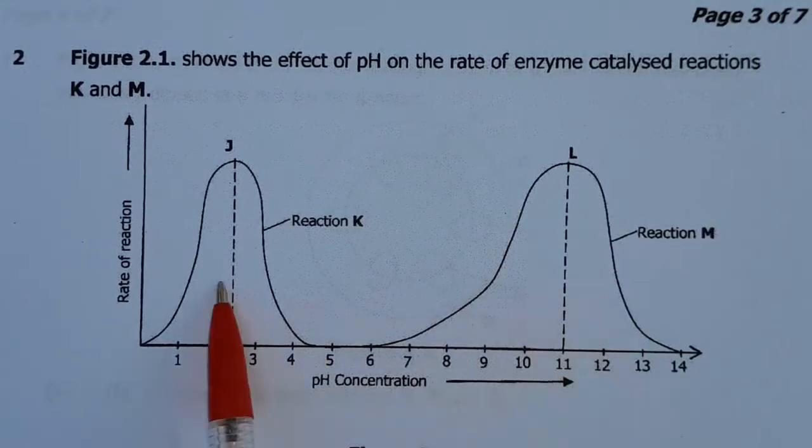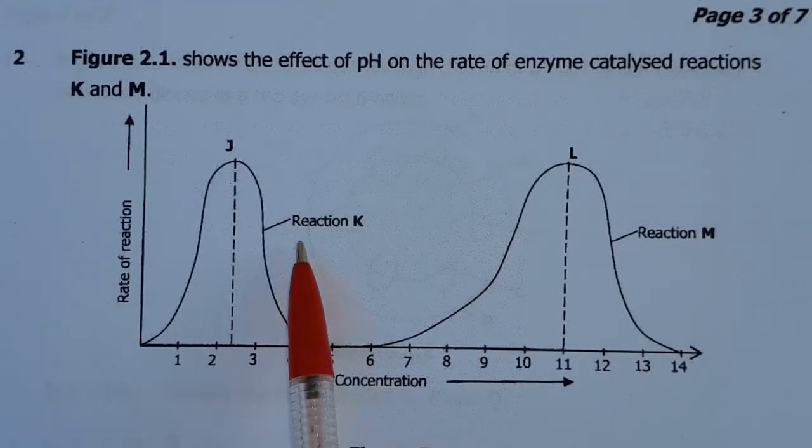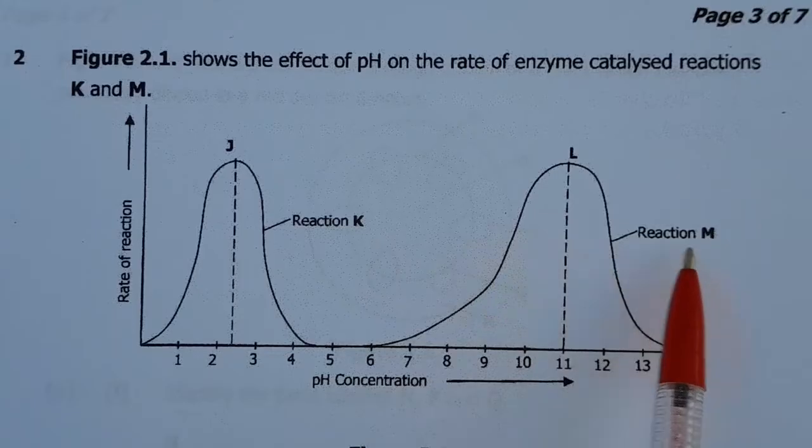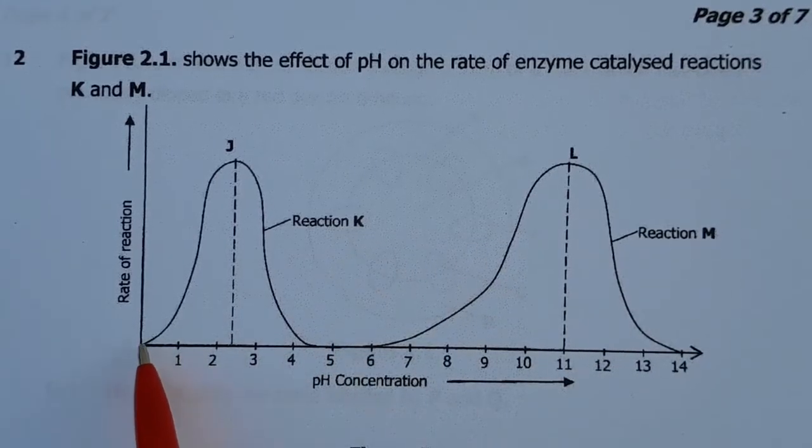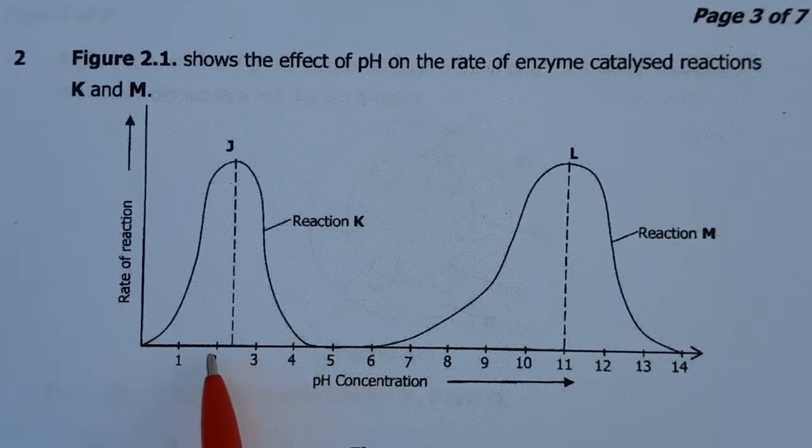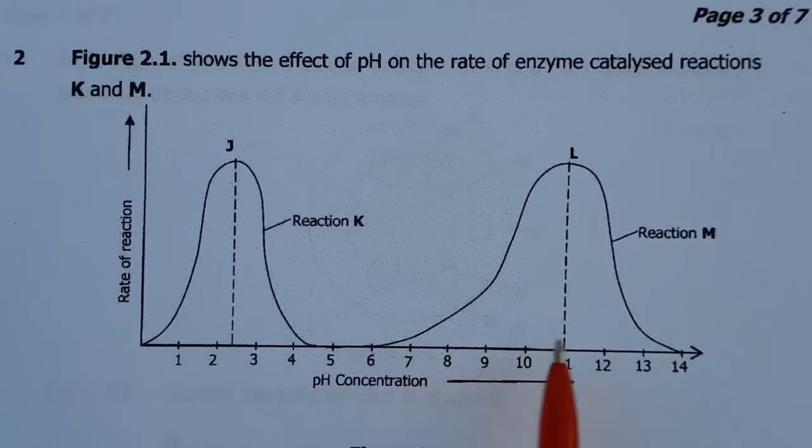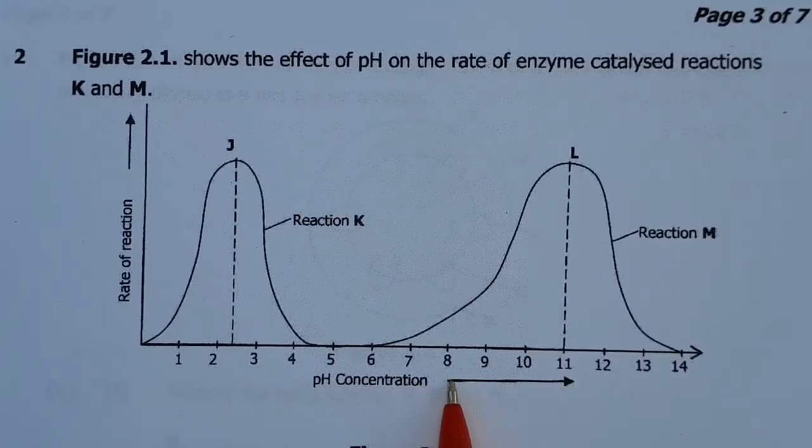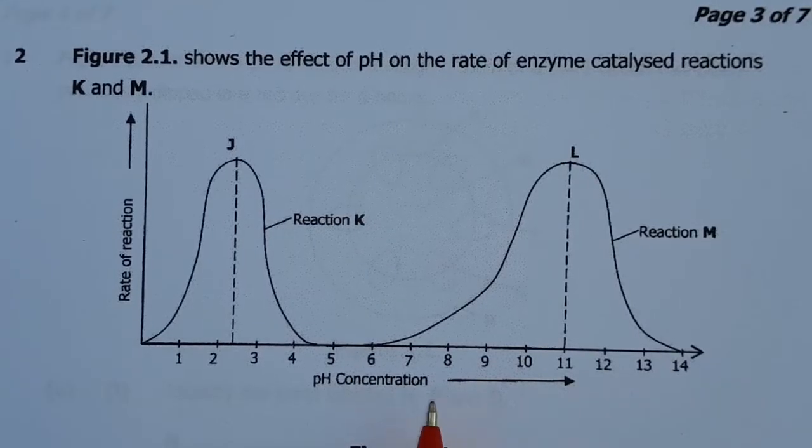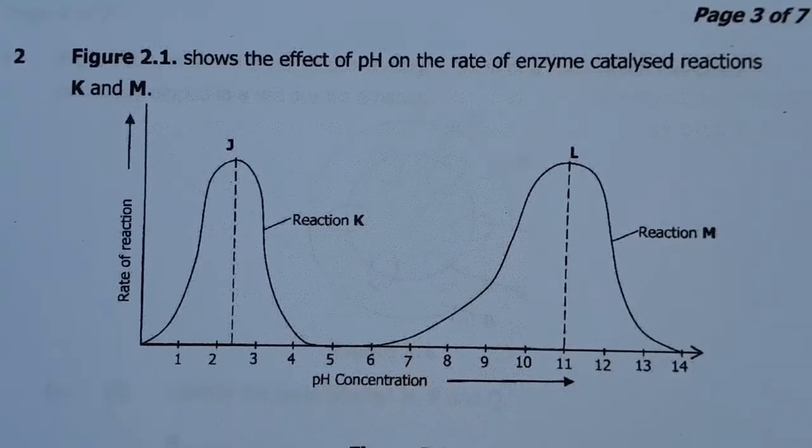So these two reactions are enzyme-catalyzed reactions. We have reaction K and reaction M. Reaction K is taking place in the acidic conditions from 0 to 6, whilst reaction M is taking place in the alkaline condition. You can see that from 8 going up there. And you can see that this is 7 here is neutral.